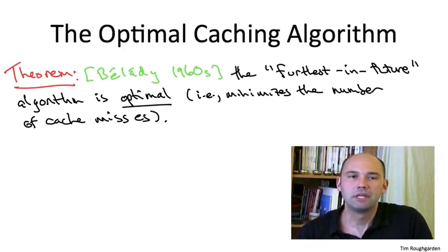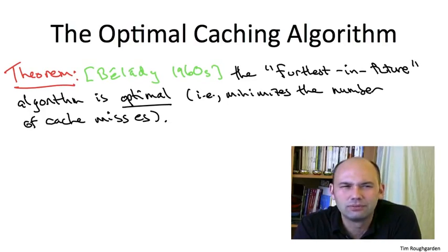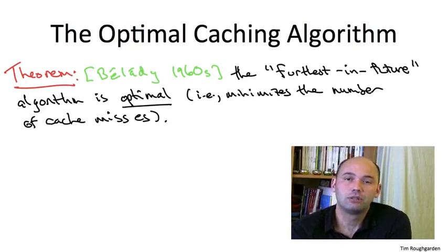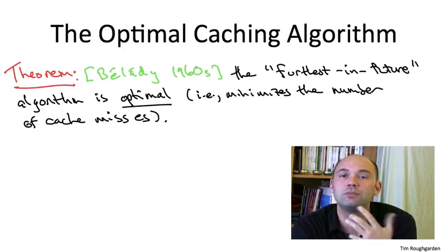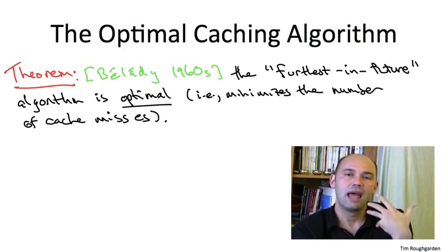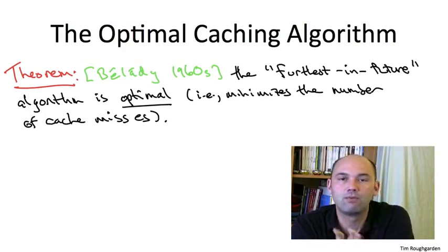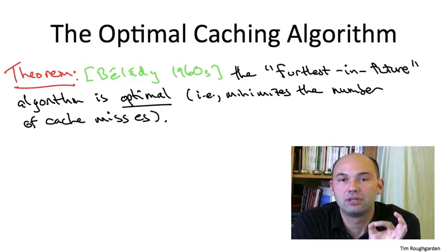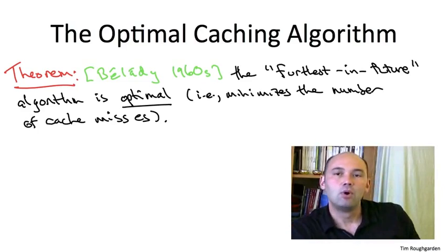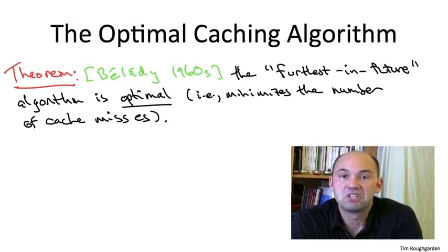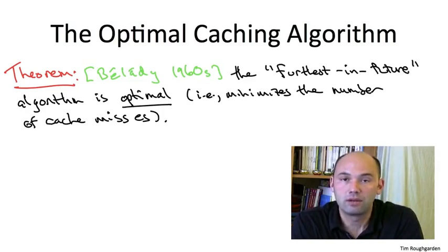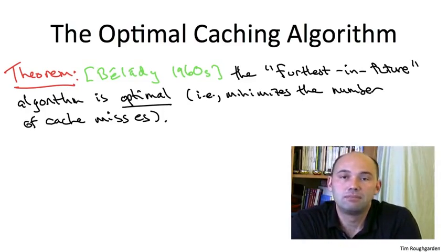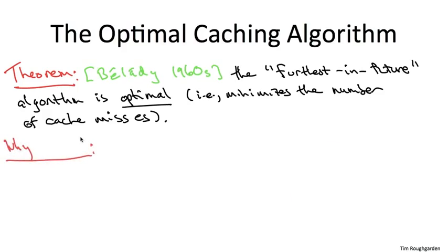Now, at this point, many of you are probably justifiably scratching your heads. You're wondering, why is this useful? It doesn't seem like this is what we wanted. The objection to this result being that the furthest in the future algorithm is clairvoyant. Its very definition assumes that you know the future. It assumes that at the moment that you have to make an eviction, you're aware of when each of the pieces of data in the cache will be requested next. But if you think for a minute about the motivating applications for studying the optimal caching problem, this assumption just doesn't hold. You simply do not know the future. You simply do not know when each of the pieces of data in your cache will be requested next. So this algorithm is not defined. It is unimplementable.